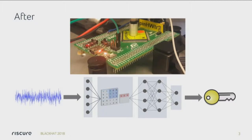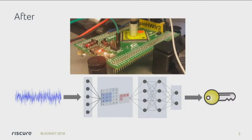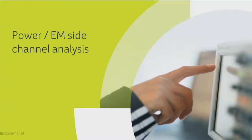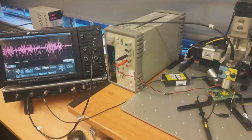Normally I would take a survey of who knows DPA and who knows deep learning, but I can't see you anyway. So I'll just dive into the basics of both, then explain the experiments we did and the results we got. Let's first do power and EM side-channel analysis. For the sake of time I'm going to stay pretty abstract, which also means I'm not 100% correct, but you can ask me questions later.